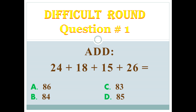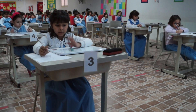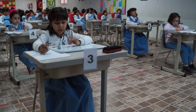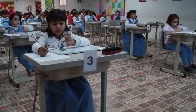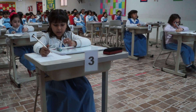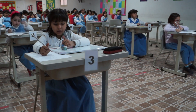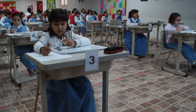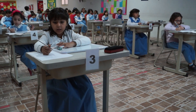A: 86. B: 84. C: 83. D: 85. Again: A, 86. B, 84. C, 83. D, 85. Go.